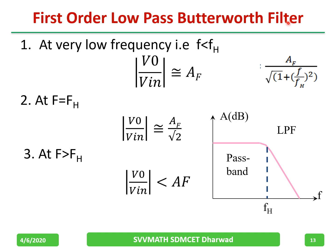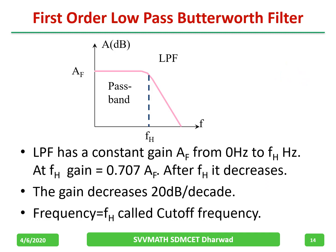Analyzing the first-order low pass Butterworth filter equation: when f is much less than f_H, V_out/V_in is approximately equal to Af. At f equal to f_H, the denominator becomes root 2, giving Af divided by root 2. When f is much greater than f_H, the gain becomes much less than Af. So the filter has a constant gain Af from 0 to f_H; at f_H the gain is 0.707 of maximum, and beyond f_H the gain decreases.